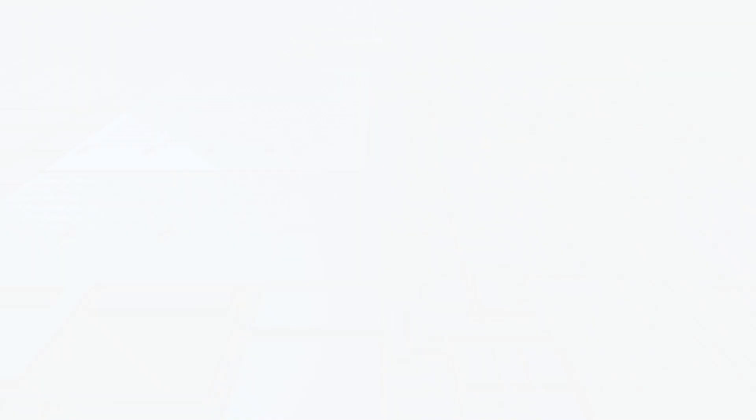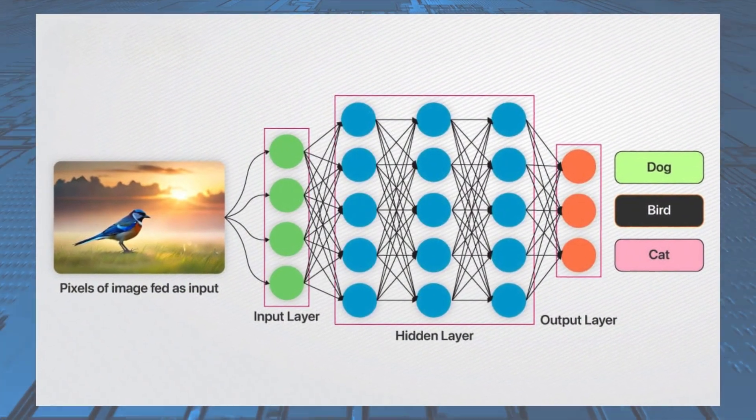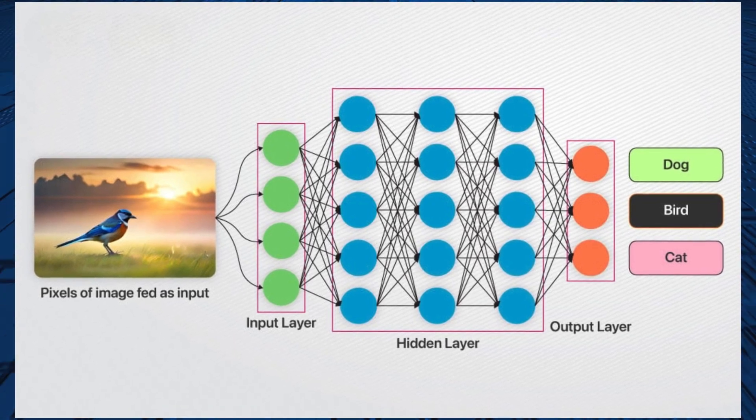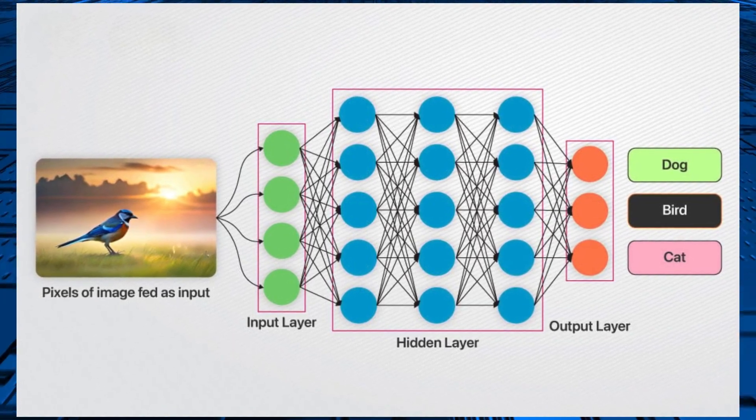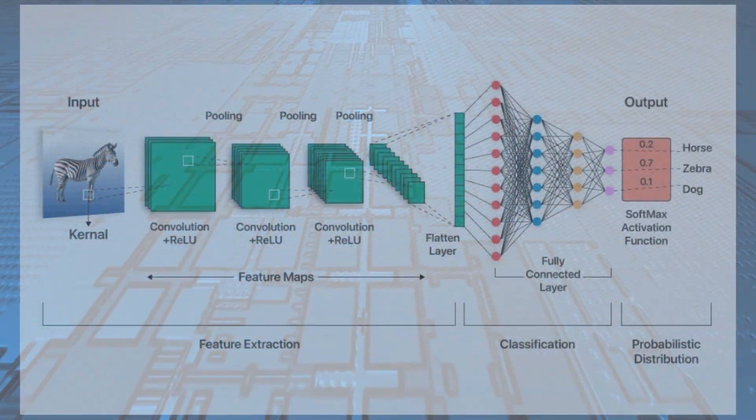For example, consider you have input data: dogs, birds, cats' images, and this image dataset passes to deep neural networks that train the model and predicts the images in the output layer.